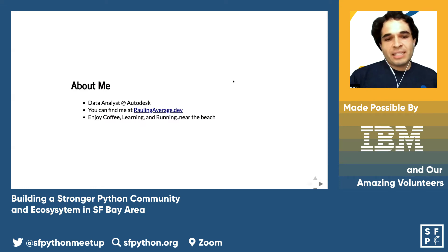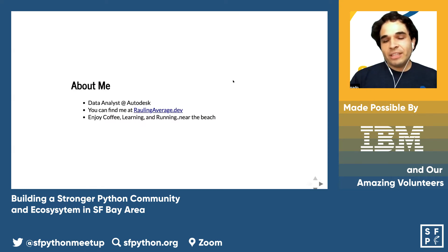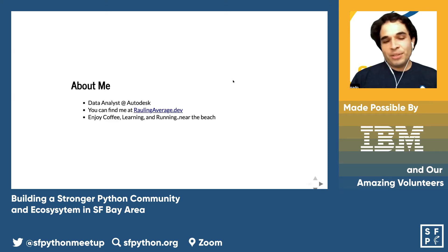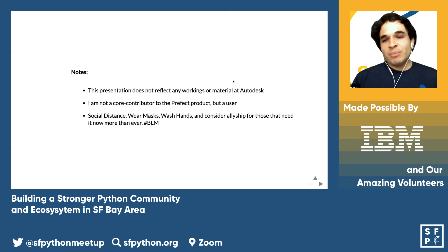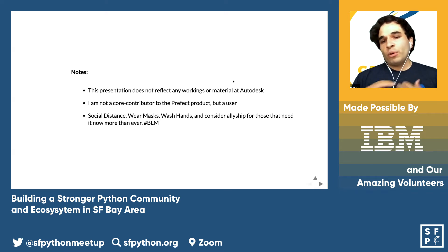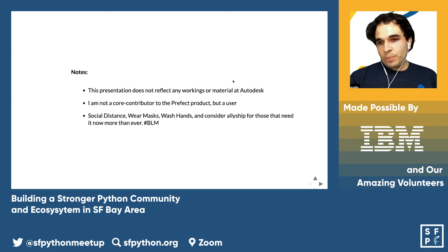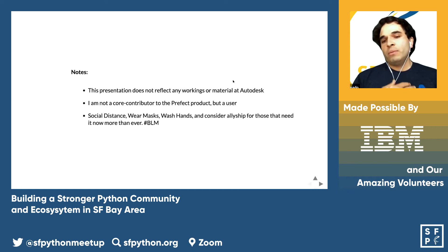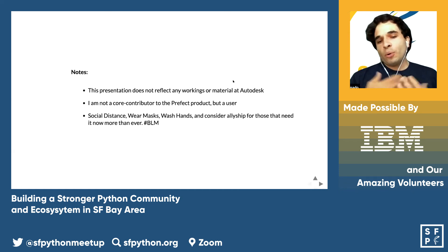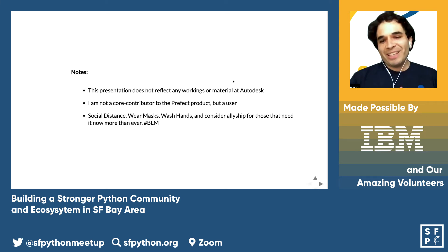I'm a data analyst at Autodesk. You can find me at rawlingaverage.dev. I enjoy coffee, learning, and just casual running near the beach. Some notes about this presentation: it doesn't reflect any work-related material related to my work at Autodesk, or any involvement of what this would be with Autodesk. And I'm not a core contributor to Prefect, but rather just a common user like y'all.